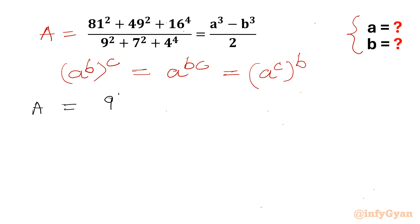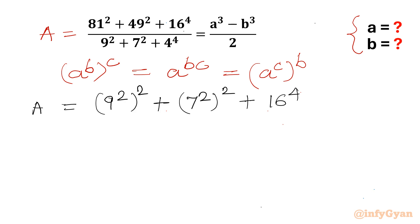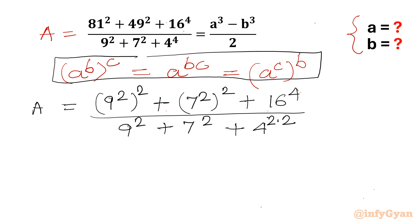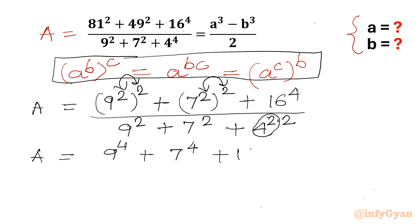We can write 81 as (9²)² and 49 as (7²)². For 16, we write 16^4. Using the exponential property and multiplying the exponents, the numerator becomes 9⁴ + 7⁴ + 16⁴, and the denominator becomes 9² + 7² + 16².